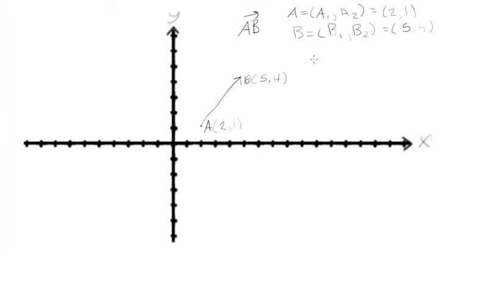So we take vector AB, and its components are equal to [B₁ - A₁, B₂ - A₂]. The first component is B₁ minus A₁, and the second component is B₂ minus A₂.